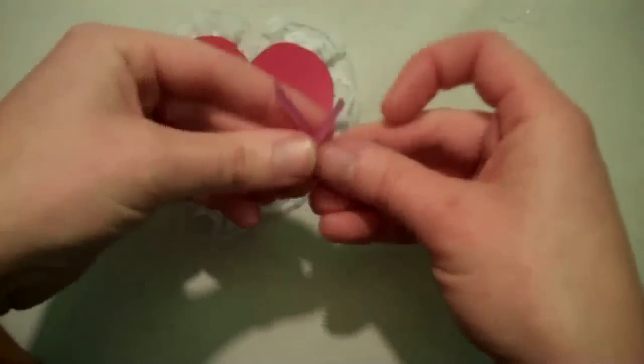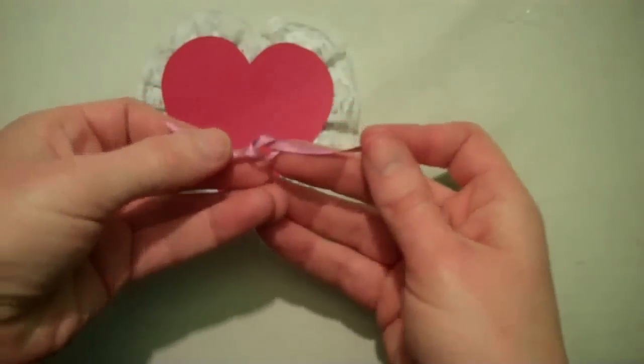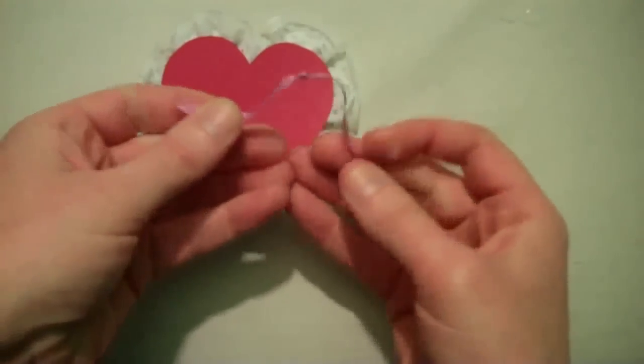Next, take a piece of pink ribbon and tie a knot in the very center of it. You might have to tie it twice to get the knot thick enough.